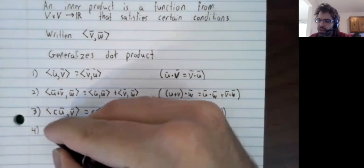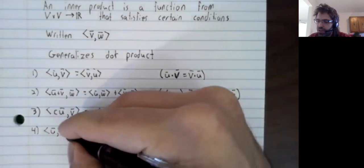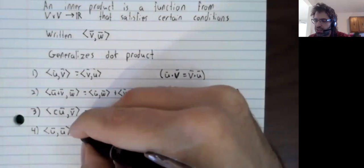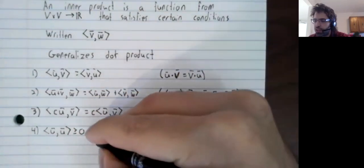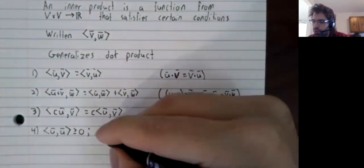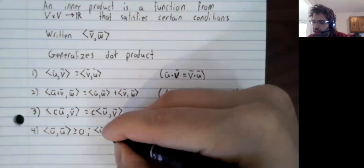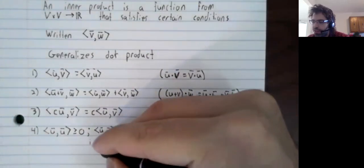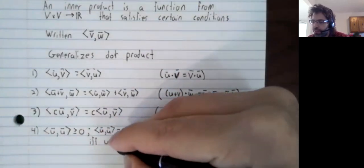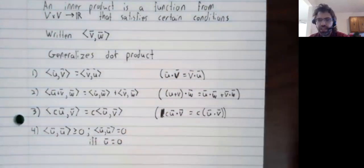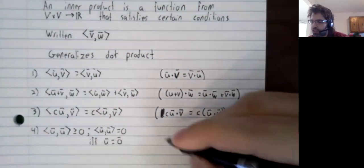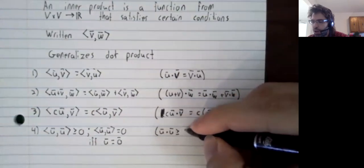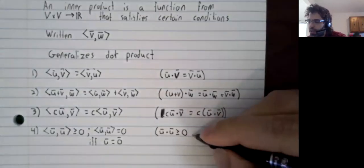Finally, the inner product of any vector with itself is greater than or equal to zero. And the inner product equals zero if and only if the vector is the zero vector. Once again, this is a property that dot products have.